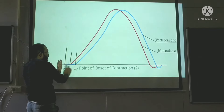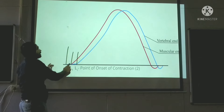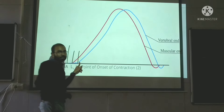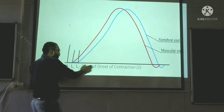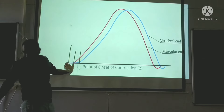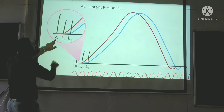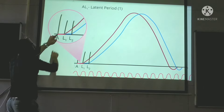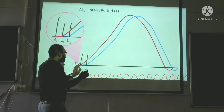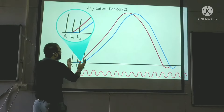L1 and L2 — this is your latent period, this is your contraction phase, and this is the relaxation phase. L1 is the latent period of the muscular end, and L2 is the latent period of the vertebral end. We can see that the latent period L2 is more — larger — as compared to the muscular end.